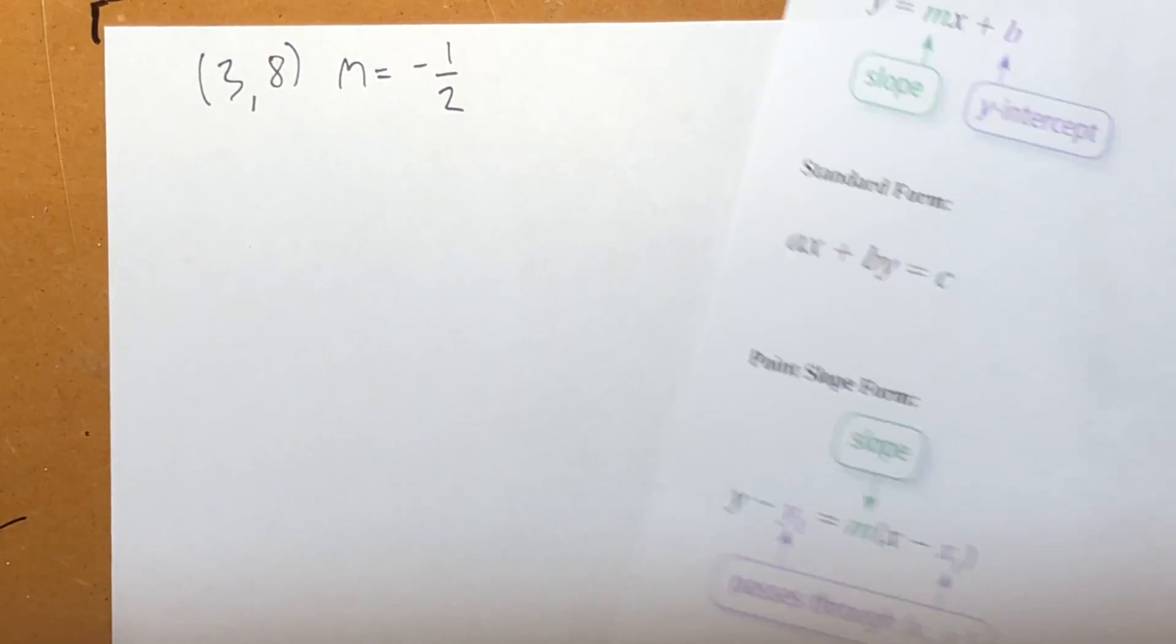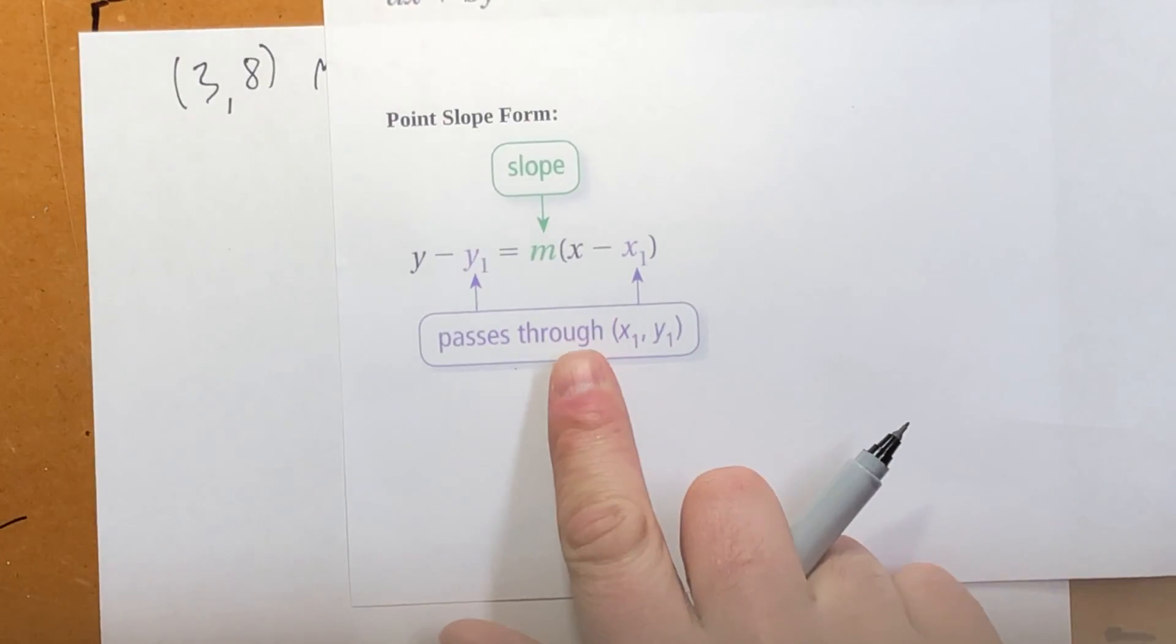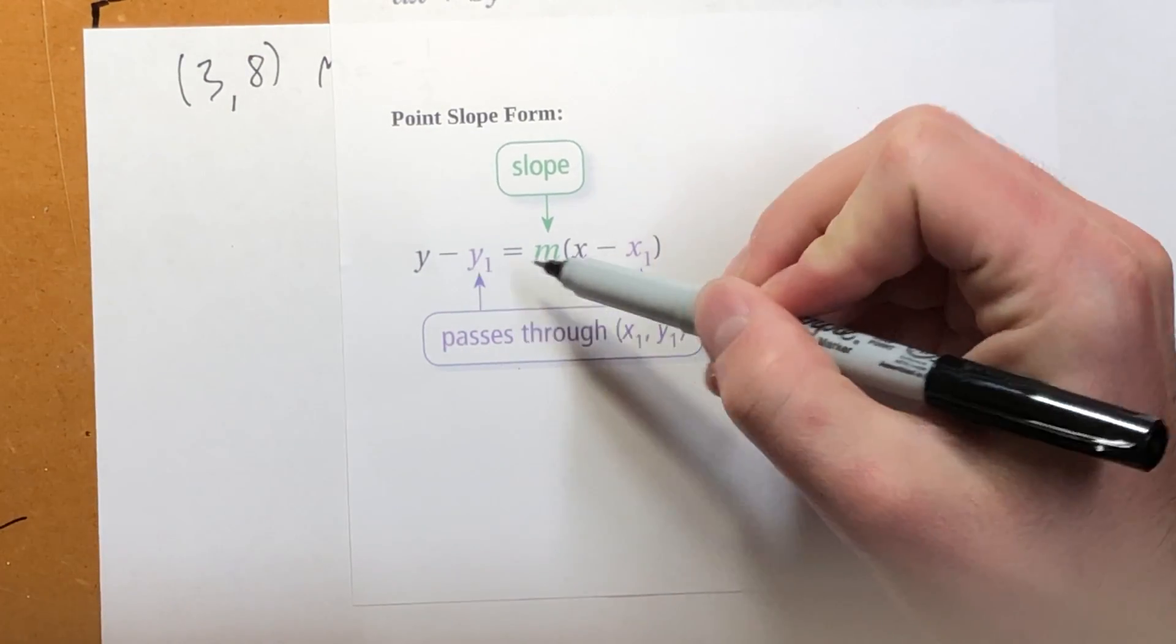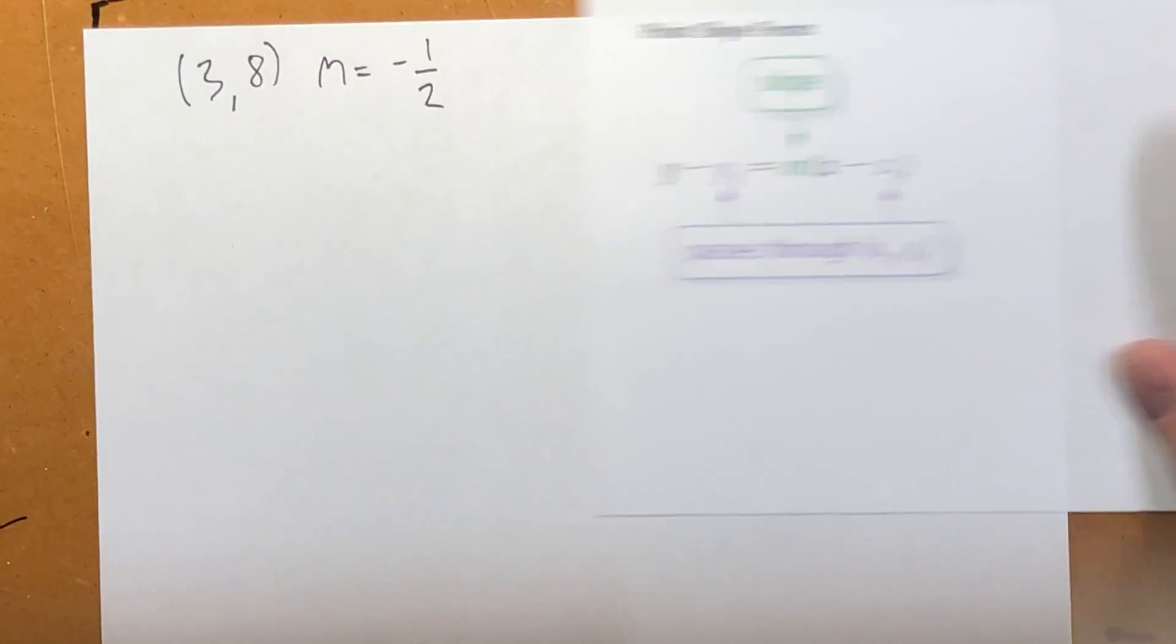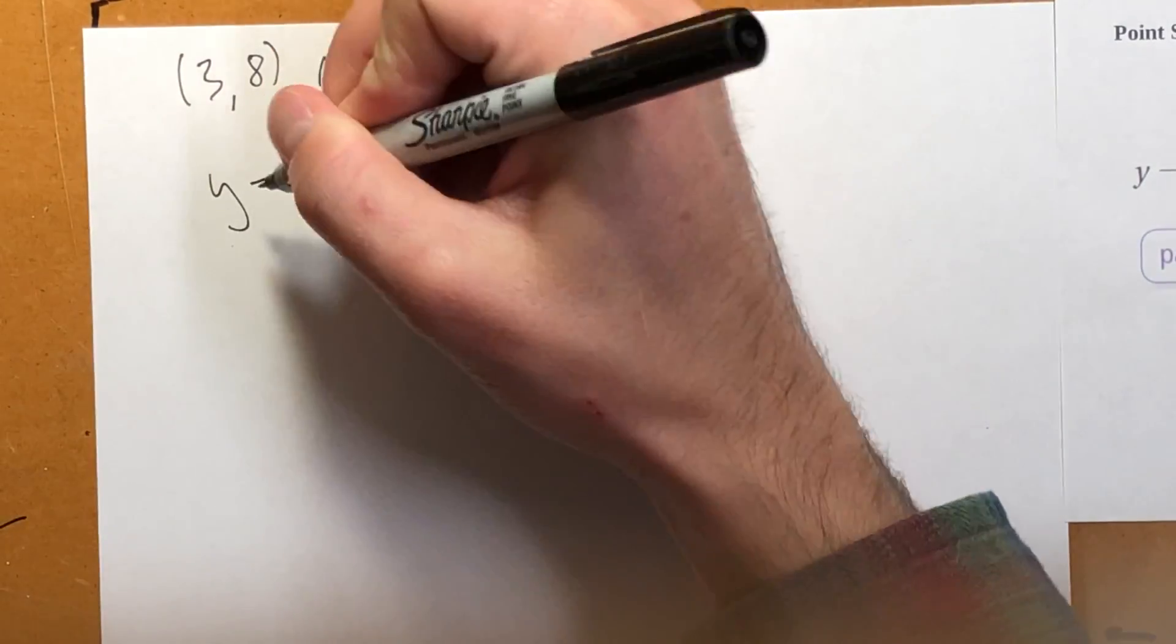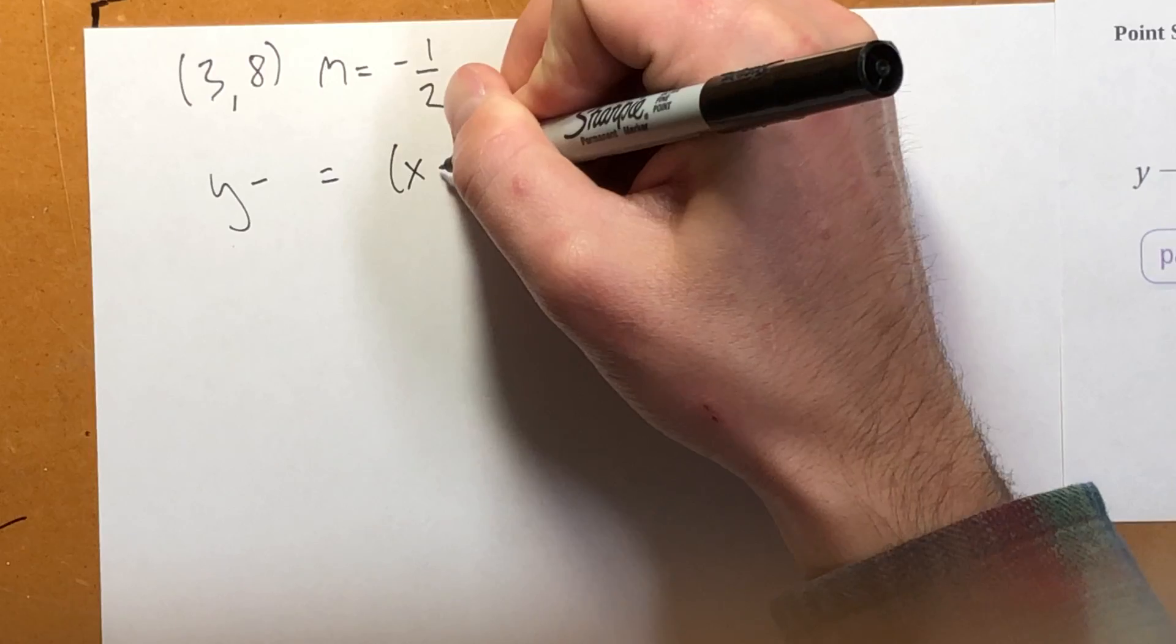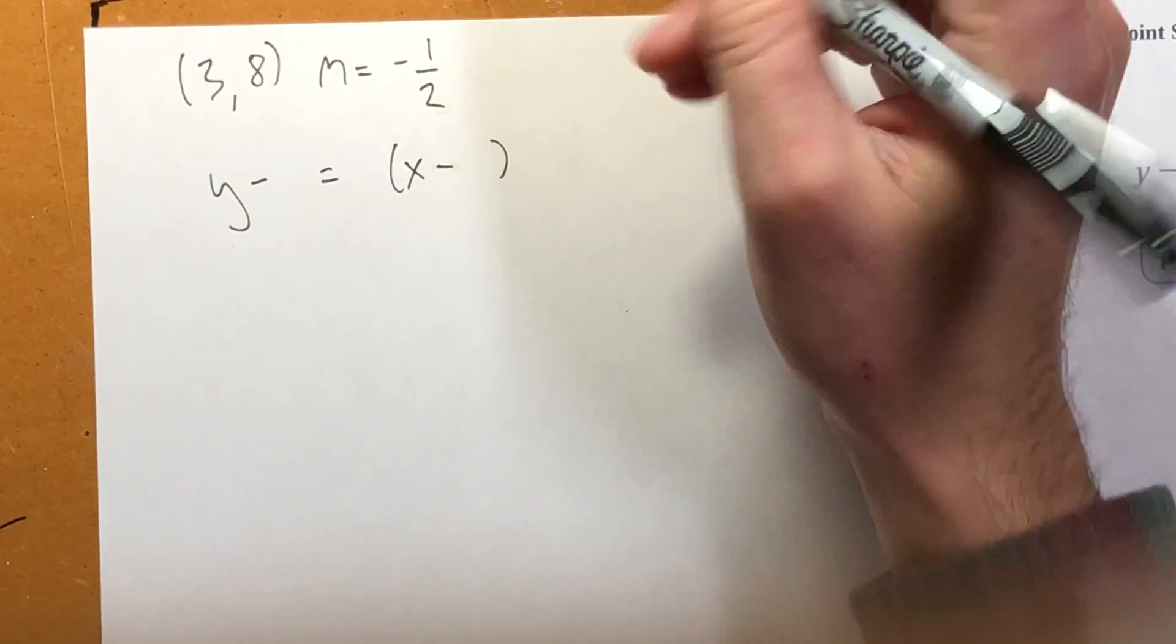So point-slope form looks like this. I'm going to rewrite this equation, but I'm going to leave y1, m, and x1 blank. So I have y minus y1 equals m times x minus x1.